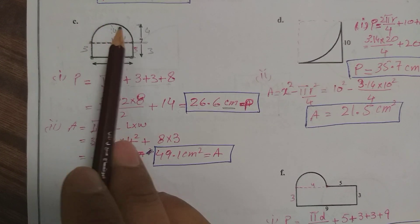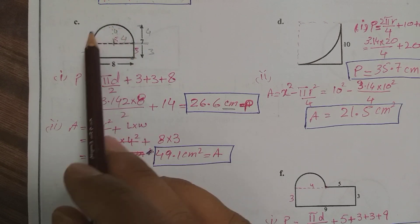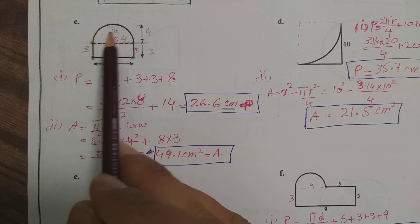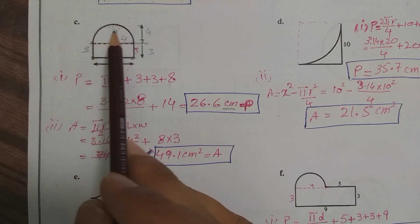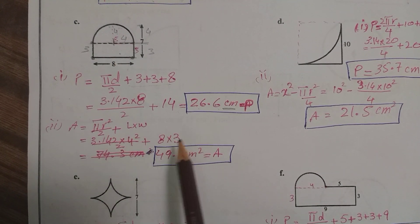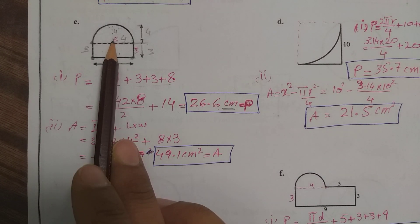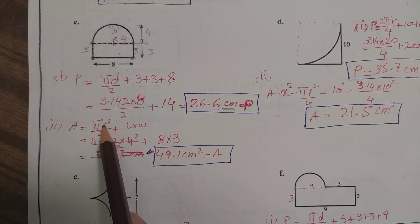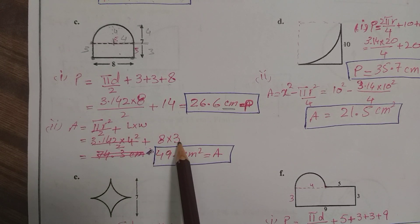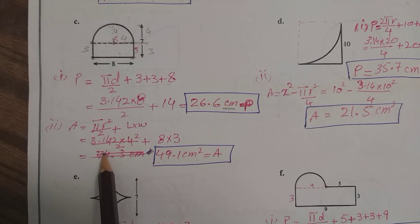For the area of part c, the shape is a combination of a semicircle and a rectangular part. Area equals pi r squared divided by 2 for the semicircle, plus length times width for the rectangle. The radius of the semicircle is 4, so 4 squared equals 16. The rectangle is 8 times 3. Simplifying gives the total area as 49.1 centimeters squared.